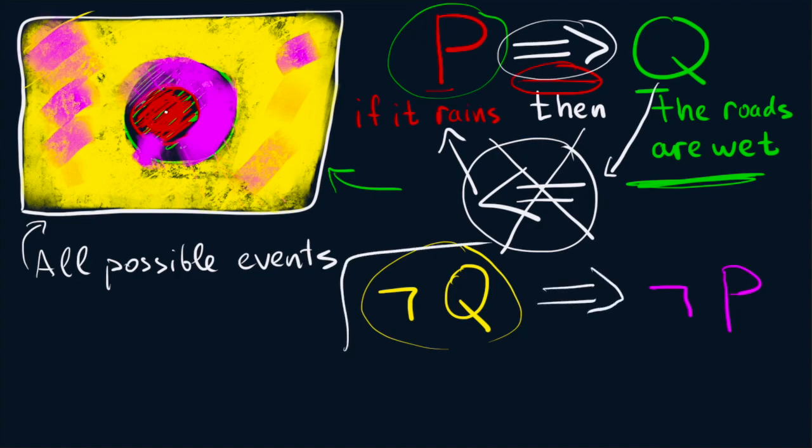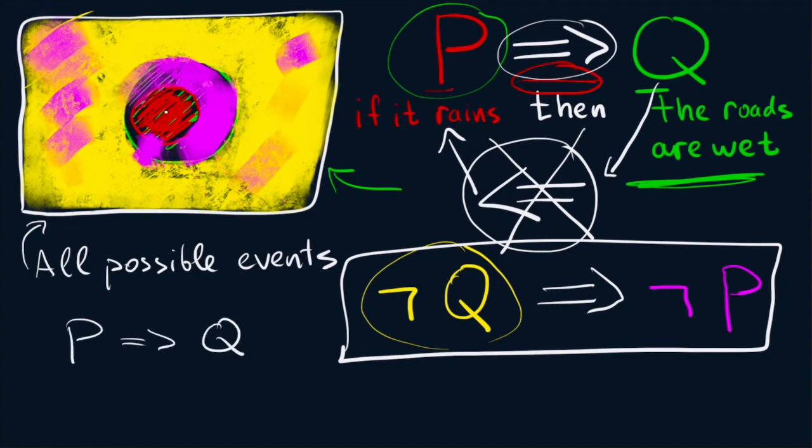Therefore, this implication, this logical statement, is valid. So remember, when you have an implication P implies Q, it is not the fact that you can reverse the implication. But you can only do so if you also negate the statements.